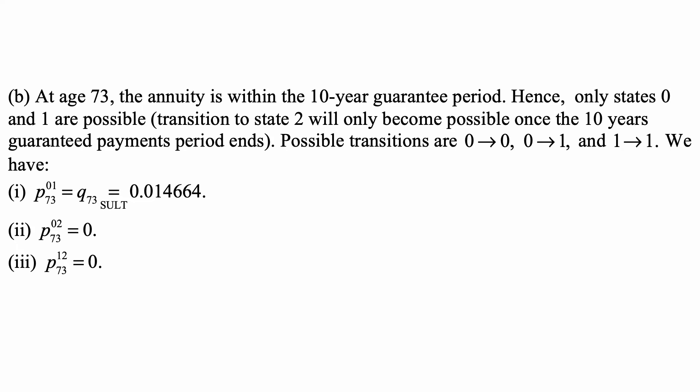P7301 is the probability of transition from state 0 to state 1, which in this moment is simply the probability of dying within a year at age 73. We look it up in SULT, the standard ultimate life table, and it equals 0.014664. P7302 is 0 because you can't transition to state 2 at that time.